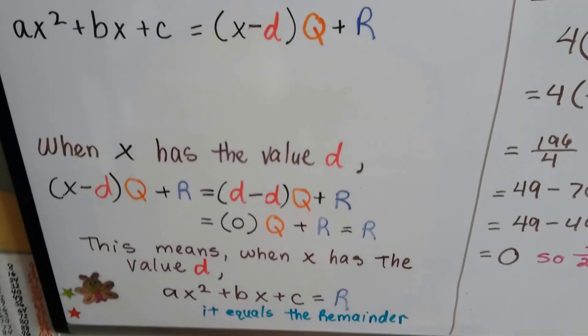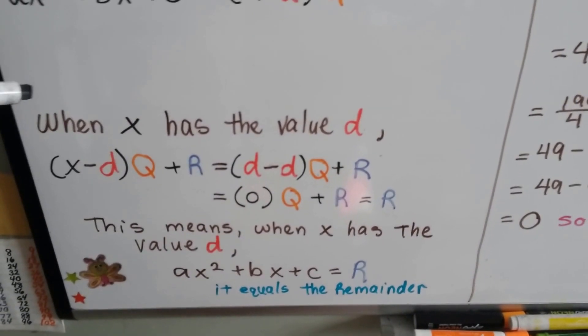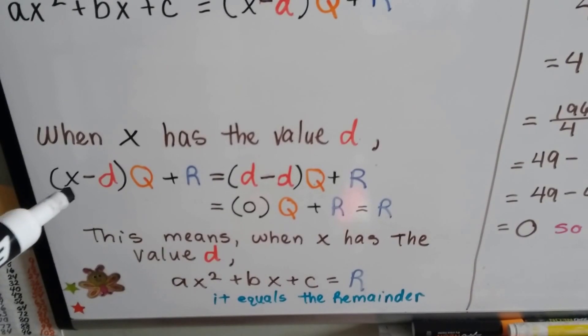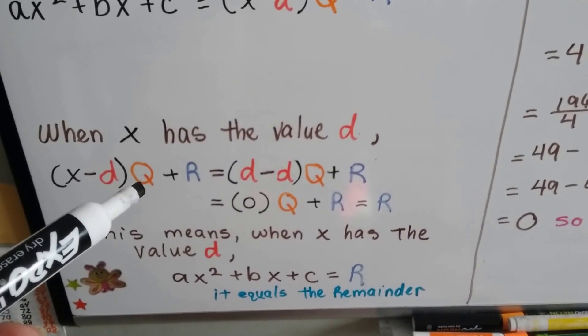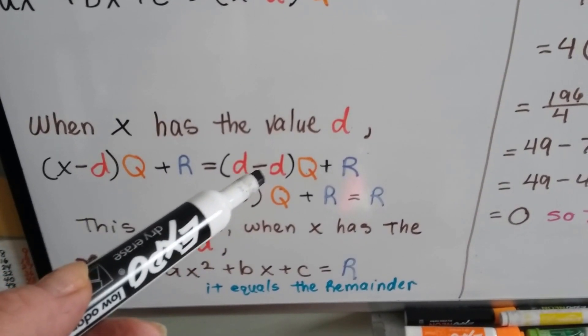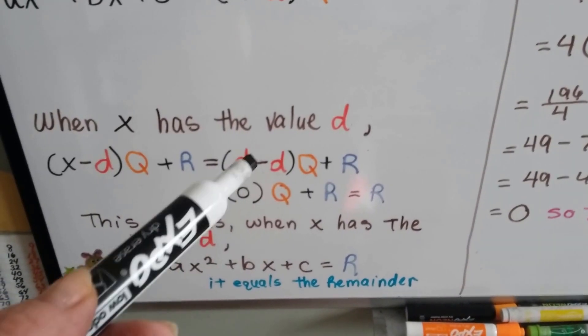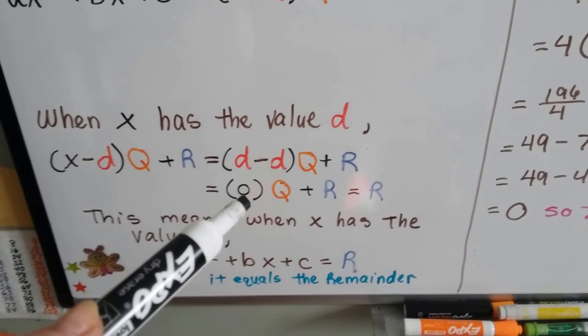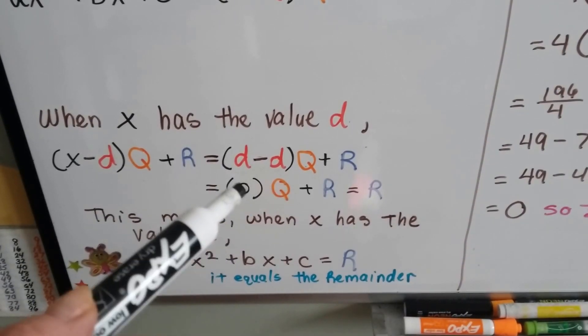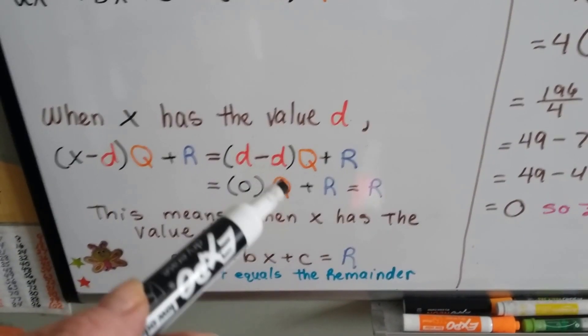Now stick with me because this is going to seem really confusing, but just bear with me. Now when x has the value d, some value of some number d, then x minus d multiplied by the quotient plus the remainder is going to equal that number d minus that number d multiplied by the quotient plus the remainder. This d minus d is going to be a zero, isn't it? So if we multiply zero by the quotient, that's going to equal zero, and if we add the remainder, the only thing that's going to be left is the remainder because this part equals zero.